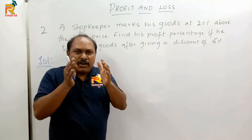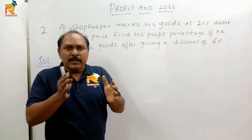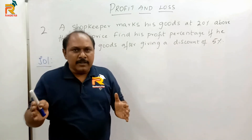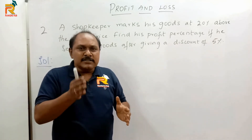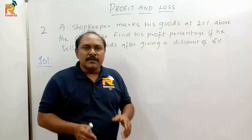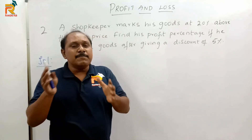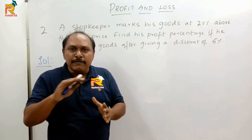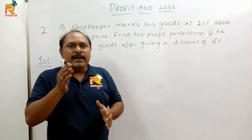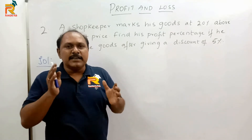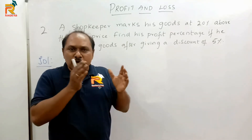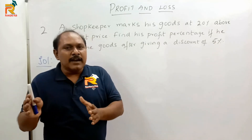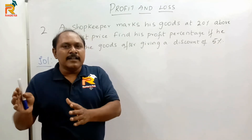Now let's see the solution. A shopkeeper is marking his goods at 20% above the cost price. Assume the cost price of the article is 100, so the marked price becomes 120. The discount he is offering is 5%. What is 10% of 120? That is 12. So 5% is half of it, which is 6. Therefore 120 minus 6 is 114.